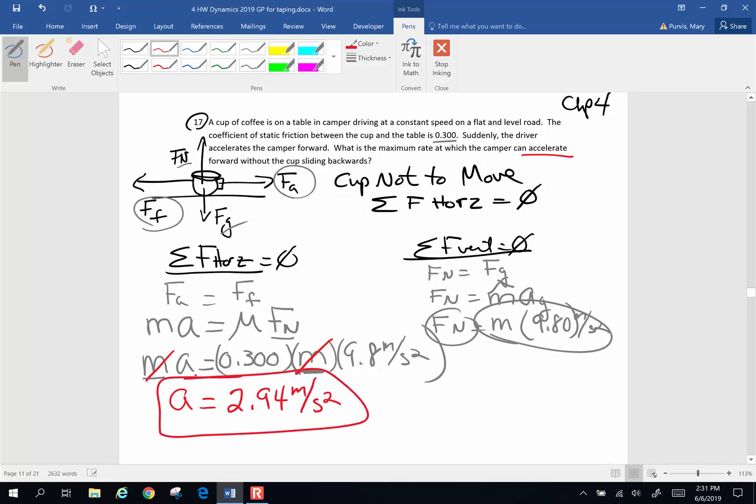When I pick up my calculator, I get 2.94 meters per second squared. A problem that is a little tricky because there's an awful lot you don't know, but if you stick to the physics and write everything out, it works. Next one, number 18.